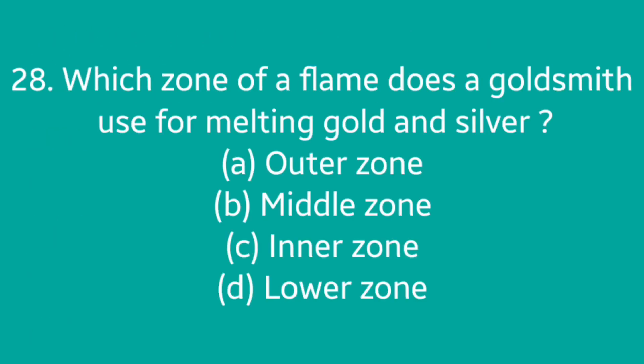Question number 28: Which zone of flame does a goldsmith use for melting gold and silver? Options: Outer zone, Middle zone, Inner zone, Lower zone. Answer is option A: Outer zone.